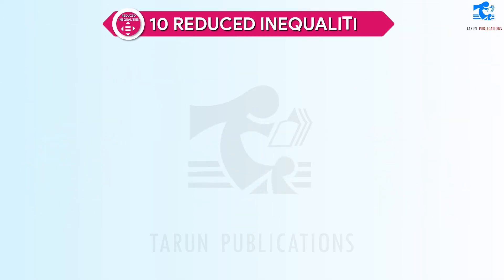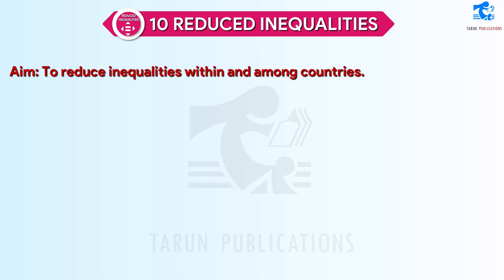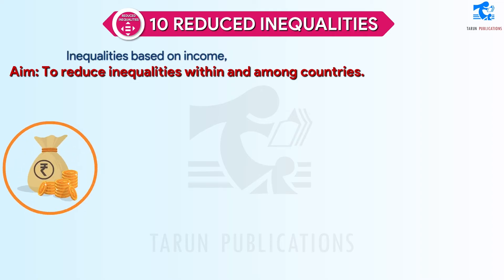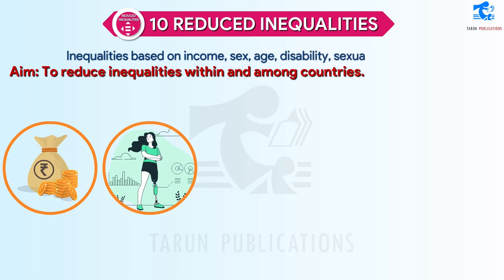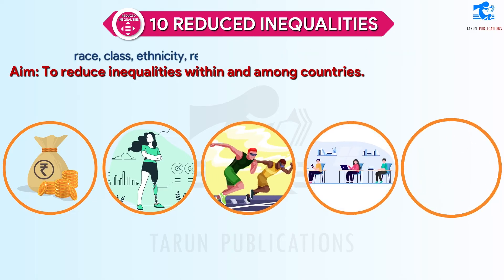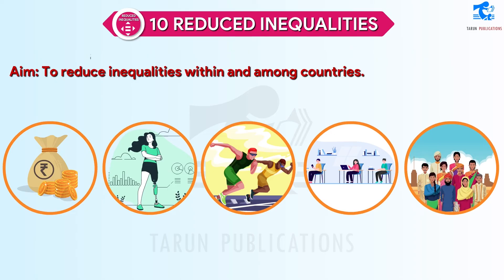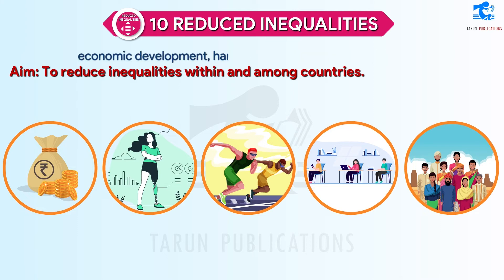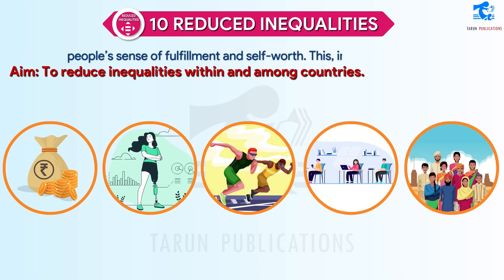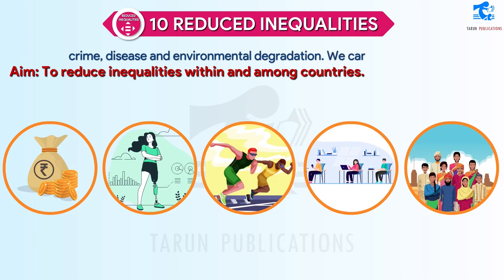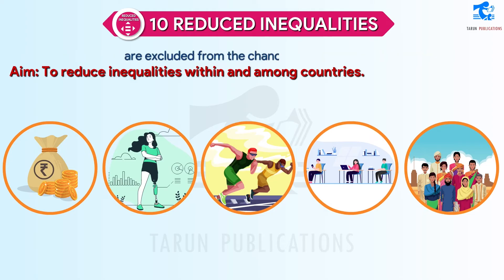SDG 10: Reduced Inequalities. Aim: to reduce inequalities within and among countries. Inequalities based on income, sex, age, disability, sexual orientation, race, class, ethnicity, religion, and opportunity continue to persist across the world. Inequality threatens long-term social and economic development, harms poverty reduction, and destroys people's sense of fulfillment and self-worth. This, in turn, can breed crime, disease, and environmental degradation. We cannot achieve sustainable development and make the planet better for all if people are excluded from the chance for a better life.